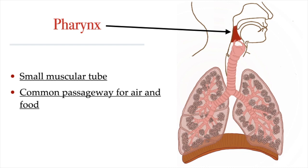After the nasal cavity, air moves into the pharynx. The pharynx, which is basically your throat, is shaped like a funnel. During respiration, it conducts air between our nasal and oral cavities to the larynx and the trachea. Both air and food pass through the pharynx, so the epiglottis, found at the top of the larynx, is there to prevent food from moving down into the larynx and trachea and diverting it into the esophagus.